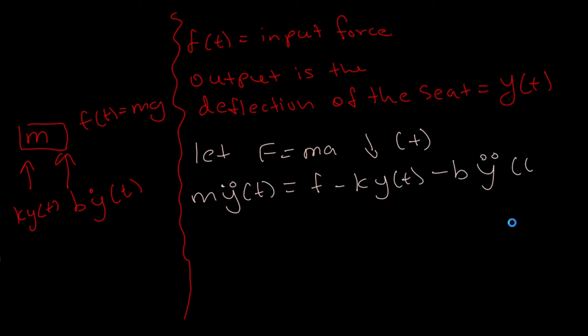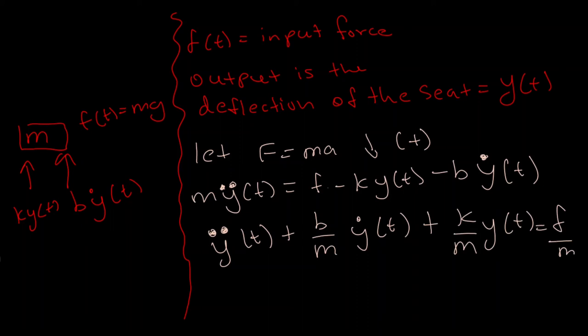We isolate the highest derivatives and what we get is the second order model. The Y components is the output here or another word is response. The F(t) function is the input which usually goes in the right hand side and this equation is known as the system model.